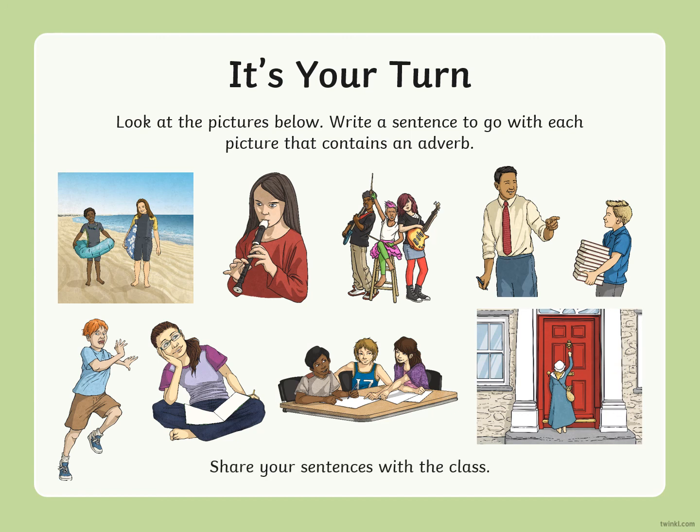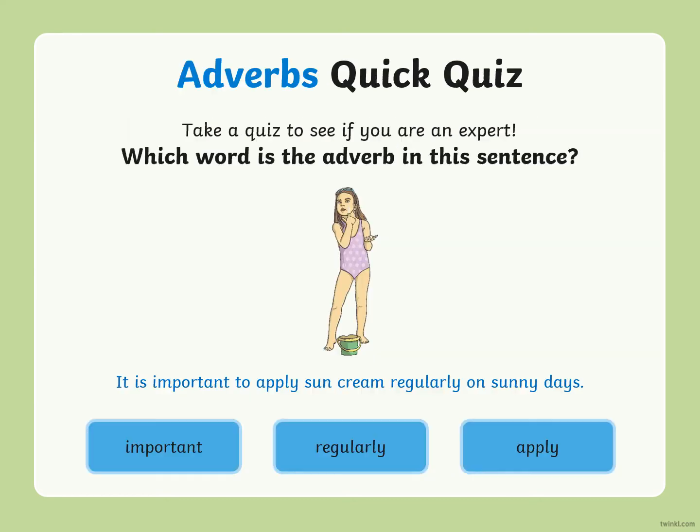Here's a quick quiz. Which word is the adverb in: 'It is important to apply sun cream regularly on sunny days'? The options are: important, regularly, apply. Remember — important is an adjective, apply is a verb. Three, two, one — the answer is of course regularly.